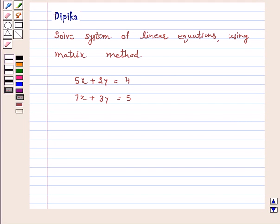Hello and welcome to the session. I am Deepika here. Let's discuss the question. Solve system of linear equations using matrix method. 5x plus 2y is equal to 4. 7x plus 3y is equal to 5.